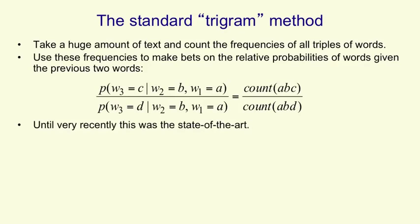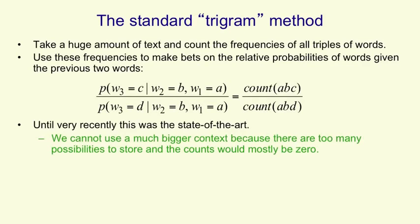Until very recently, this was the state of the art method for getting the probability of the next word to help out the speech recognizer. We can't use much bigger contexts than two previous words because there are just too many possibilities to store. And if we did use bigger contexts, the counts would be mostly zero.